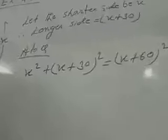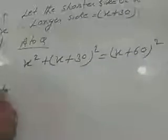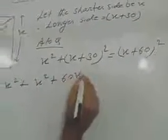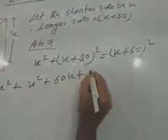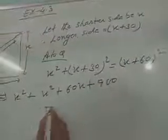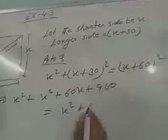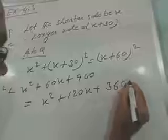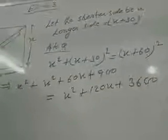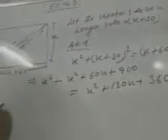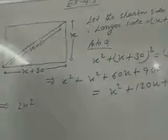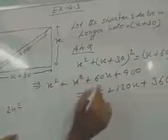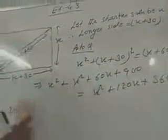Now, you remove the bracket, x square plus, this is a plus b whole square. x square plus 60x plus 30 into 30, 900 is equal to x square plus 120x plus 60 into 60, 3600. Or, x square into x square, 2x square. One thing you do, don't write the 2x square, better you cancel 1x square, 1x square. Then your calculation will be easy.